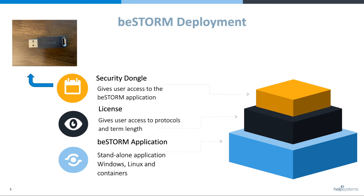This video is going to cover the BSTORM deployment. The first part of BSTORM is the application. It is a standalone application that can be installed on Windows, Linux, and in containers. For Windows, there is a GUI version and also a CLI version. The Linux version is CLI only.